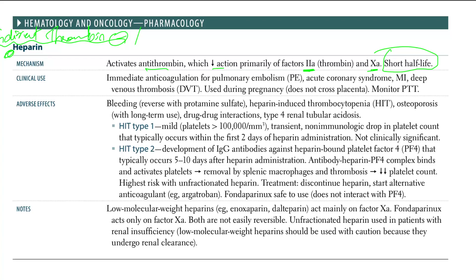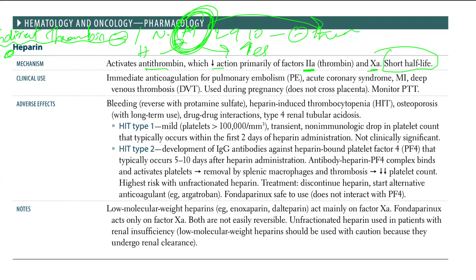Normally, antithrombin binds to factor 2, 9, 10 and inactivates them, and itself gets used up along with these factors. When heparin binds to antithrombin by its pentasaccharide sequence, that binding causes a conformational change in antithrombin, which increases its ability to inactivate factor 10a.